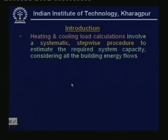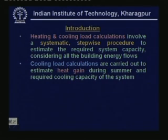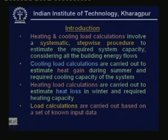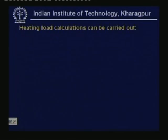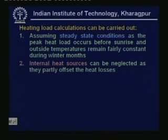Heating and cooling load calculations involve a systematic stepwise procedure to estimate the required system capacity considering all the building energy flows. Cooling load calculations are carried out to estimate heat gain during summer and find out the required cooling capacity, whereas heating load calculations estimate heat loss in winter and find the required heating capacity. Heating load calculations can be carried out assuming steady state conditions as the peak heat load occurs before sunrise and outside temperatures remain fairly constant during winter months. Internal heat sources can be neglected in heating loads because they partly offset heat losses.